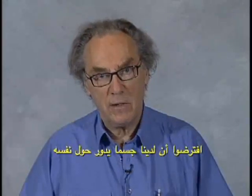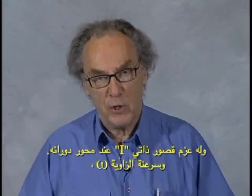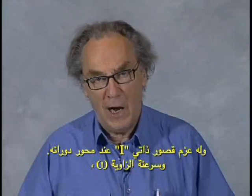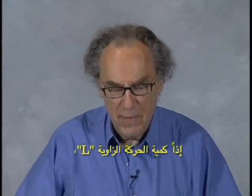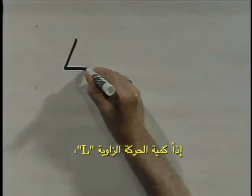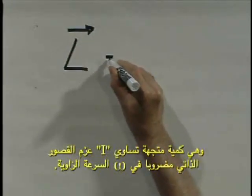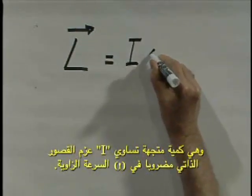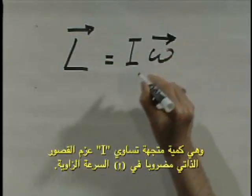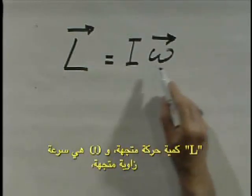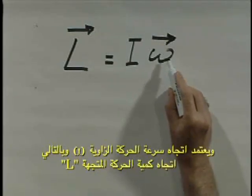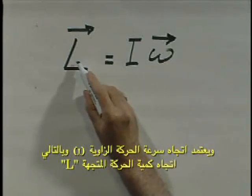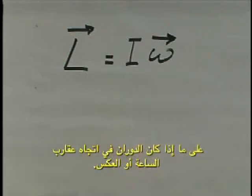Suppose we have a spinning object which has moment of inertia I — capital I — about the axis of rotation, and angular velocity omega. Then the angular momentum L, which is a vector, equals I times omega. L is a vector, and omega is a vector, and the direction of omega — and therefore the direction of angular momentum L — depends on whether the rotation is clockwise or counterclockwise.